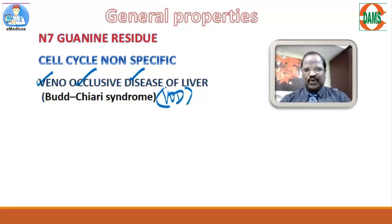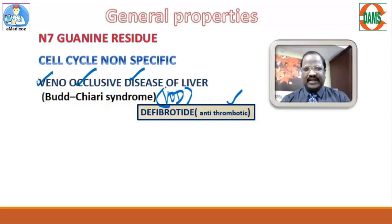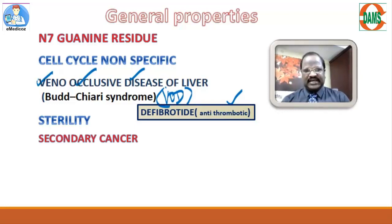An important question: to control this thrombosis we have one anti-thrombotic agent called defibrotide. Defibrotide is an anti-thrombotic agent useful to control veno-occlusive disease of the liver caused by alkylating agents. Another important general property is that the majority of alkylating agents may cause sterility and infertility, and most may also cause secondary cancer — meaning the anti-cancer drug itself can cause cancer.